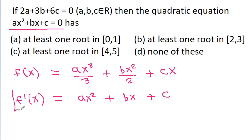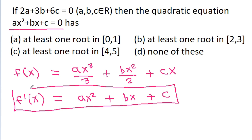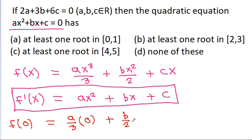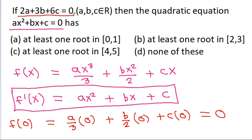So f prime of x is ax squared plus bx plus c. And f of 0 will be equal to a by 3 times 0 cubed, which is 0, plus b by 2 times 0 squared, plus c times 0, so it is equal to 0. And we have 2a plus 3b plus 6c is equal to 0.